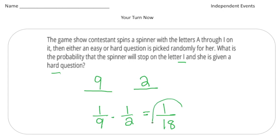So one times one is one and nine times two is 18. So there's a one in 18 chance that she will spin the spinner and land on I and then also get a hard question. All right, how'd you do?